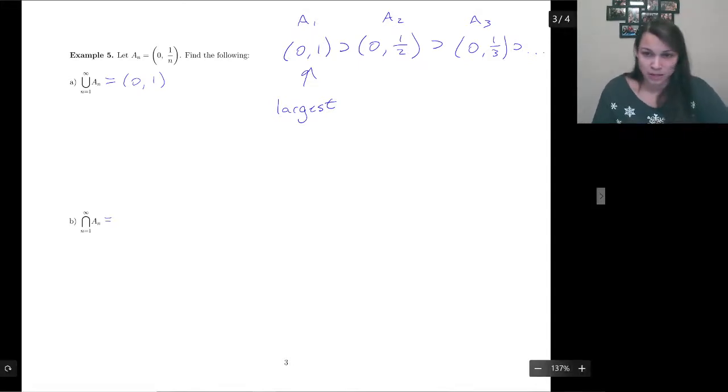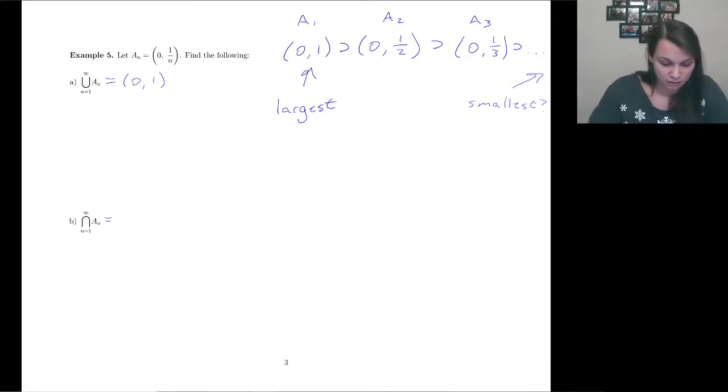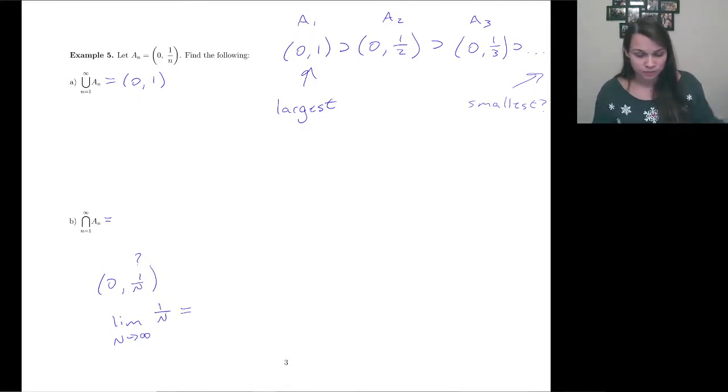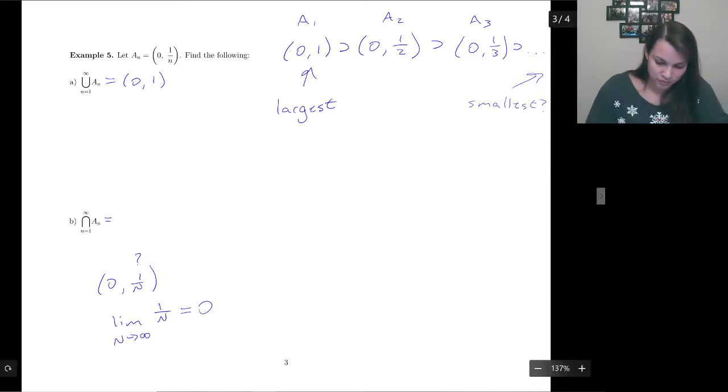Now remember, for intersections, we care about the smallest. So the question is, what is the smallest one doing? So we're going to take a limit and say, well, let's figure out. Essentially, if I get that big N back, so the smallest one would be this interval right here. And I need to know what this is doing as big N goes to infinity. So what does 1 over big N as N goes to infinity do? It goes to 0. So then we're left with going to write something really bad. We're left with the interval 0 to 0.